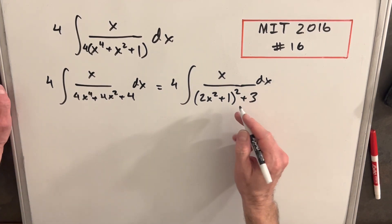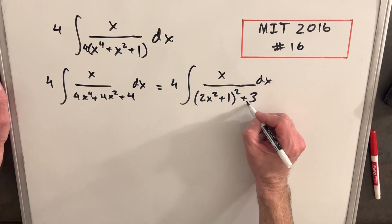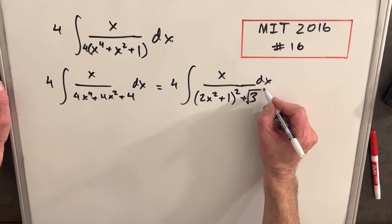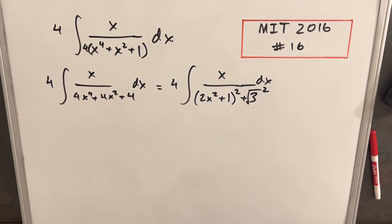But I know what I'm going to want to do is, if we're trying to get this where we can use arctan, let's write this as square root of 3 squared. I know we're going to want it in this form if we're going to use our arctan formula.